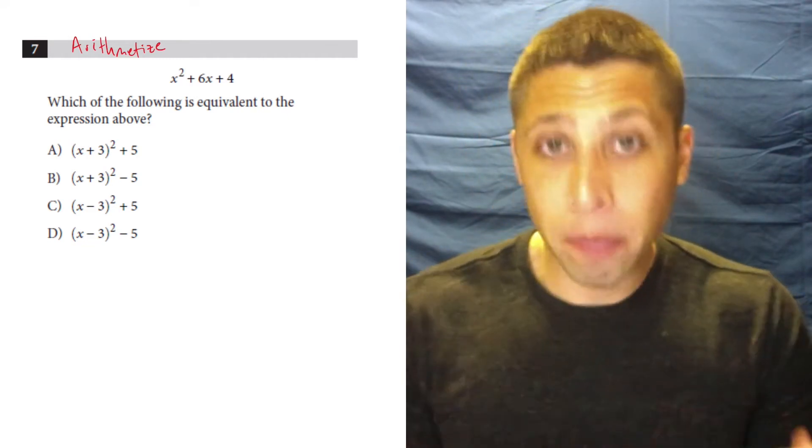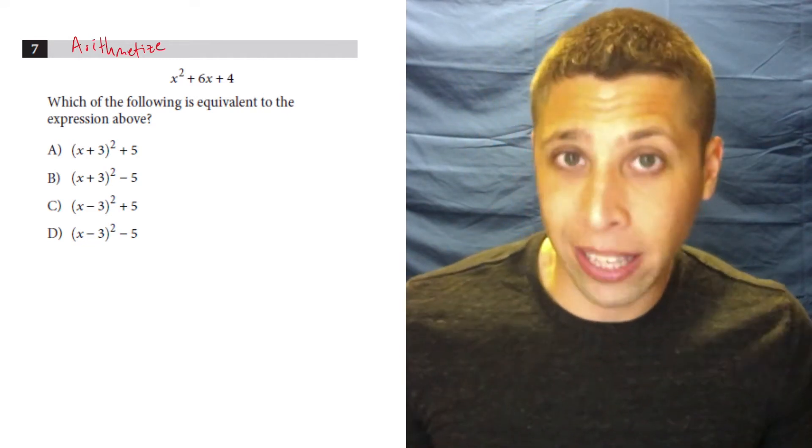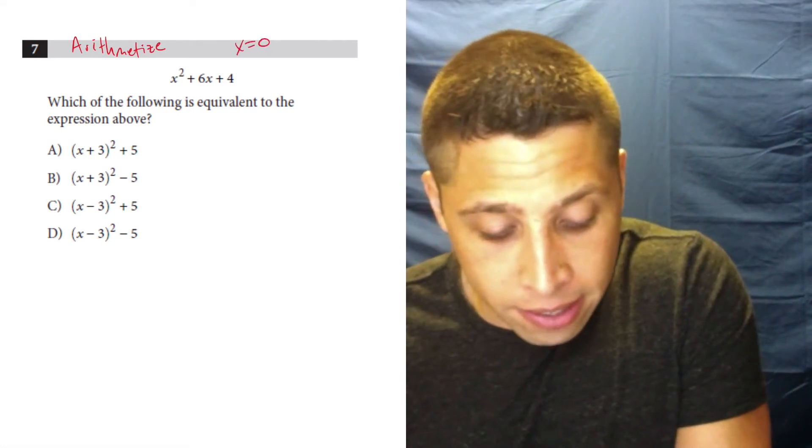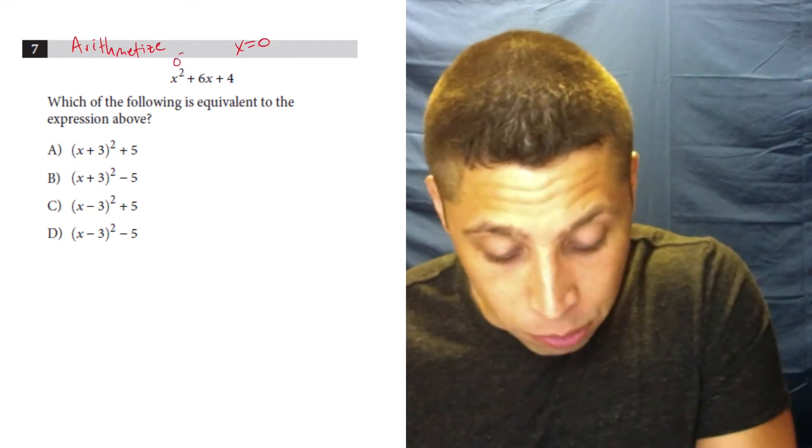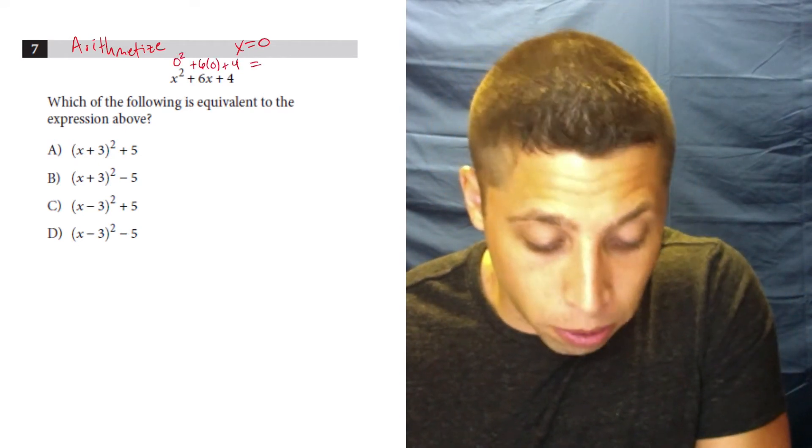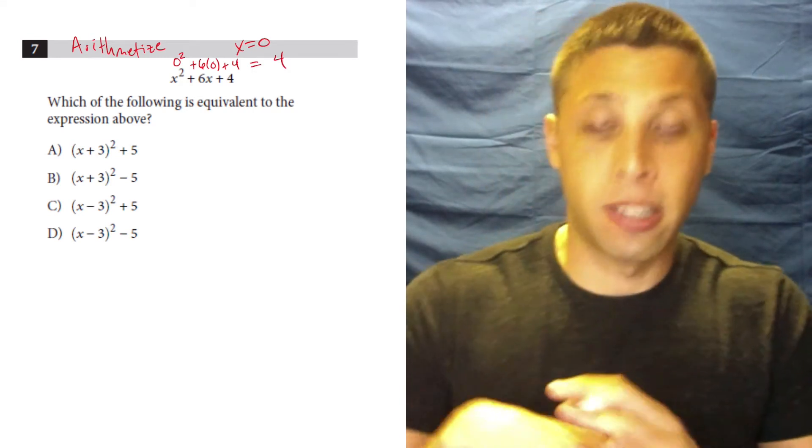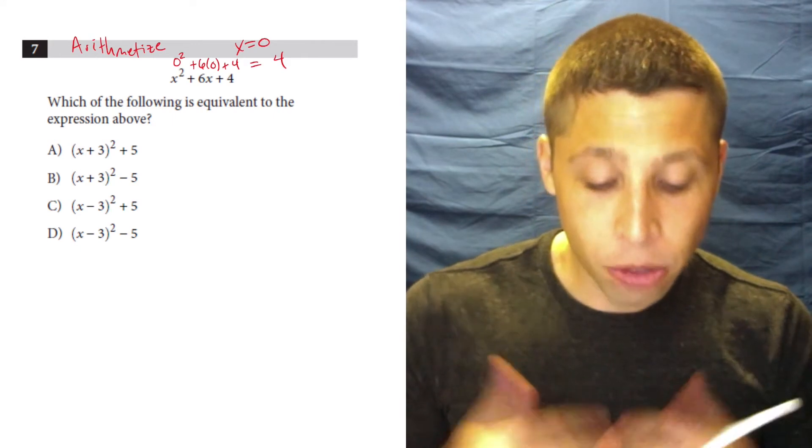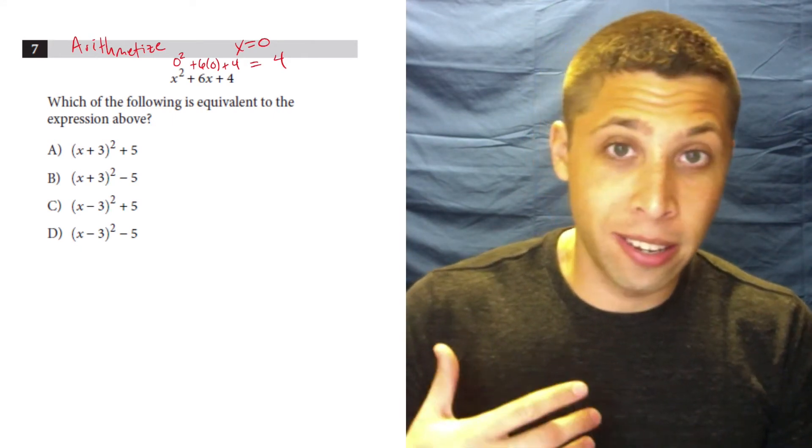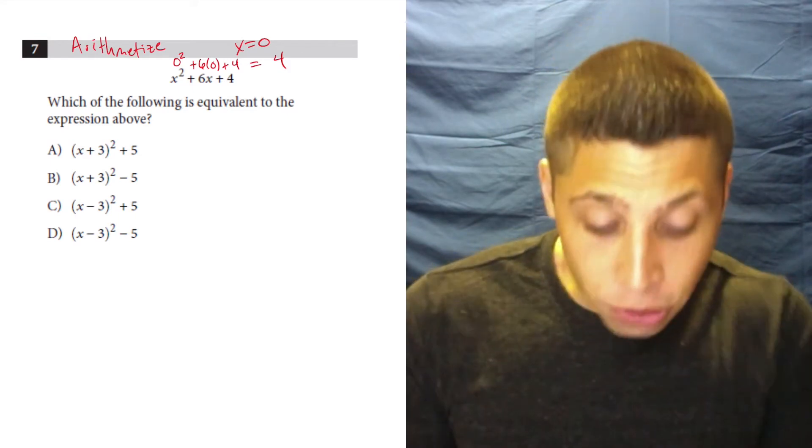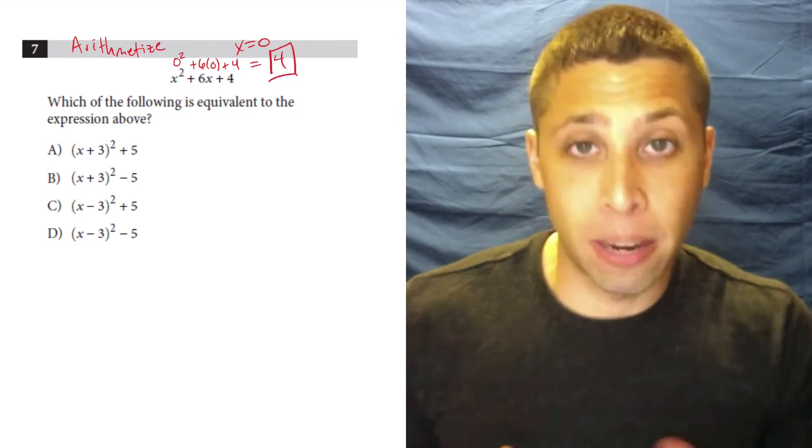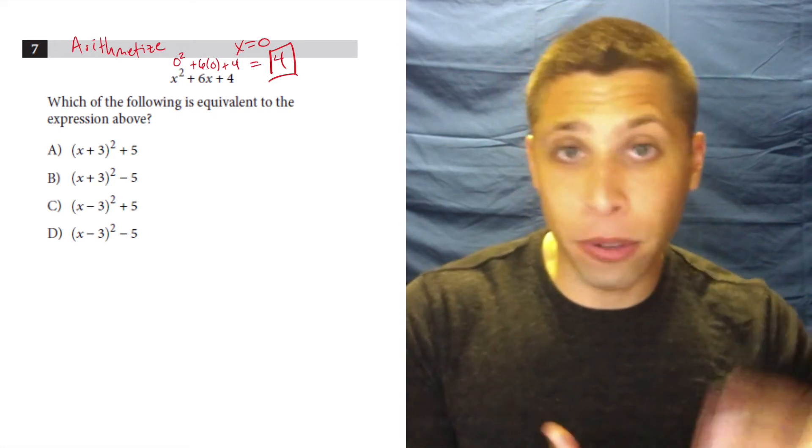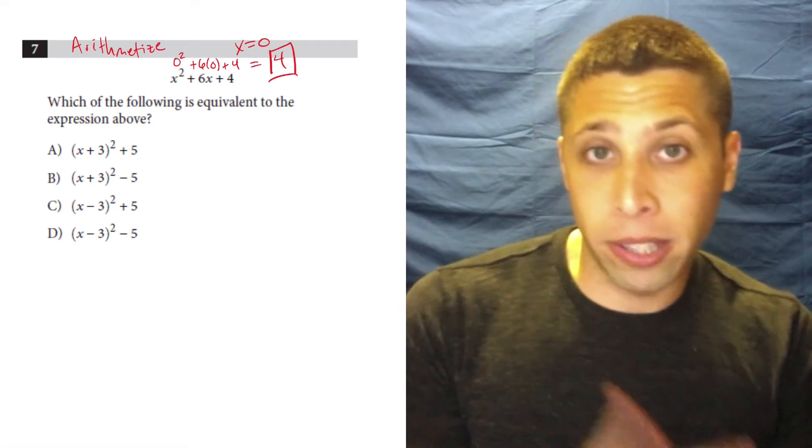So I'm lazy, and arithmetizing is all about starting off lazy and seeing what happens. So my lazy number that I would pick is x equals zero, because then it means that I'm doing zero squared plus six times zero plus four, which just means that this expression is equal to four, because all the x's disappear. So what I'm looking for now is another choice that also gives me four.